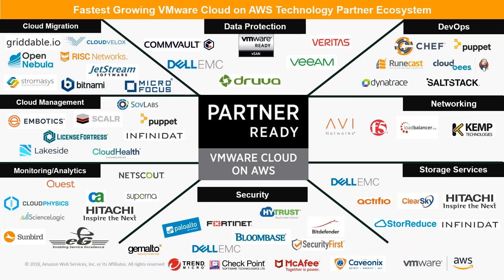The fastest-growing VMware Cloud on AWS technology partner ecosystem includes multiple partners across cloud migration, data protection, DevOps, networking, storage services, security, monitoring, analytics, and cloud management. There are many partners ready for VMware Cloud on AWS, and this is a growing list that is expanding with multiple partners readily available today.